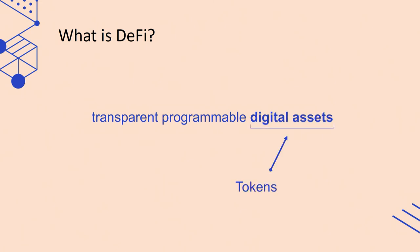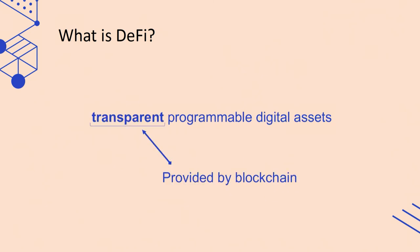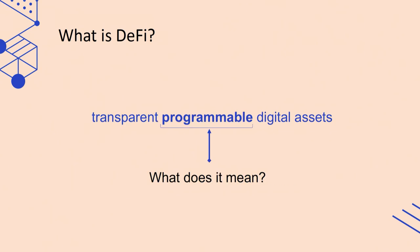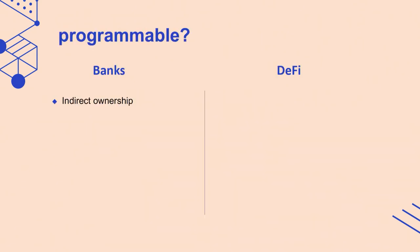Transparent, programmable digital assets. What is digital assets? The simplest definition is tokens, or some kind of assets. Why is it transparent? Because it's on a public blockchain, so everybody can see and understand what's going on. Another question: what is programmable? What does it mean? This is the hardest question in this definition. To understand what is programmable, I'd like to talk about current centralized financial systems and compare it with DeFi.